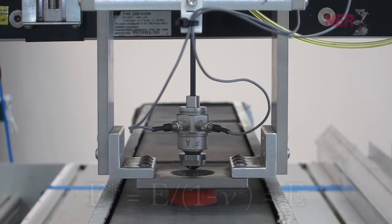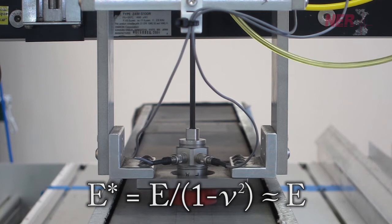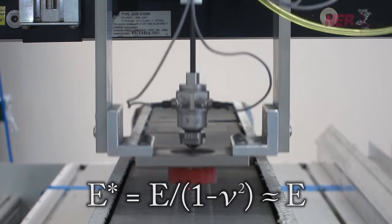Thus, the impulse hammer can be used to rapidly quantify variations in Young's modulus as a function of depth and/or on a large number of core plugs.